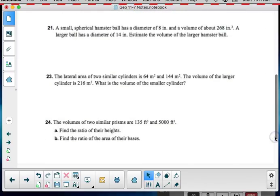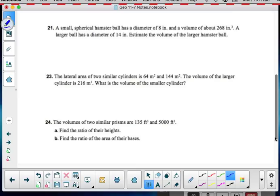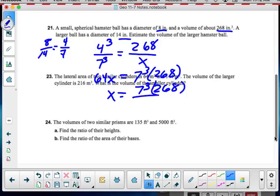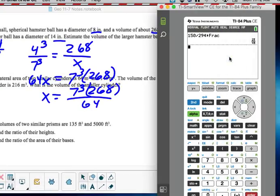Now, when we're looking at these last ones, a small spherical hamster ball has a diameter of 8 and a volume of about 268. A larger ball has a diameter of 14. Estimate the volume of the larger hamster ball. Well, I'm going to get a new ball for hammy. So, I'm looking at this ratio of 8 to 14. Those are a linear relationship. My scale factor becomes as a reduced 4 to 7. Now, I'm looking at volume. So, 4 cubed to 7 cubed is going to be equal to, remember, the smaller is 268. The larger is x. So, now I got 4 to the third power is 64x equals 7 thirds times 268.